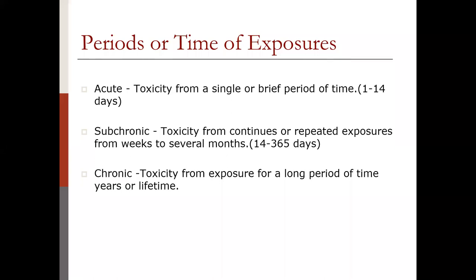When we talk about the periods or time of exposure, there are three main ranges: acute toxicity, subchronic toxicity, and chronic toxicity. Acute relates to a single or brief period of time. Subchronic is continuous or repeated exposure from weeks to months. Chronic is generally considered a very long period — years or a lifetime. These are relative concepts but they need to be well-defined in any study. When you go to the literature, be sure that toxicity is also defined by a period or time of exposure.